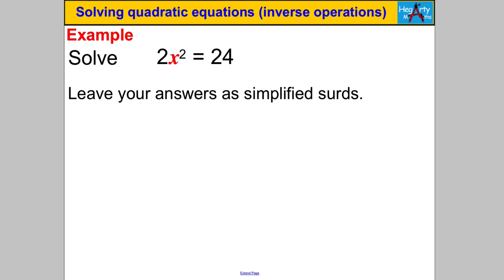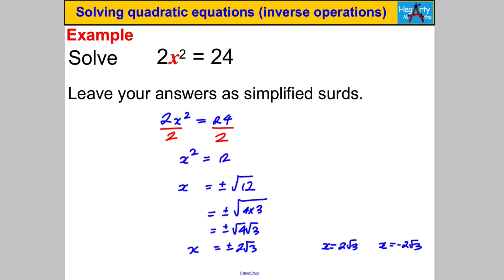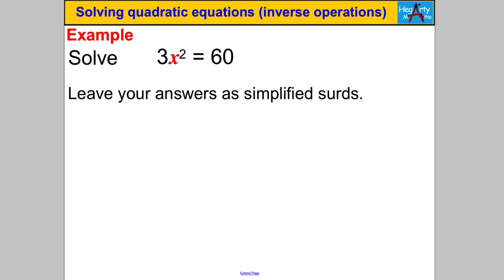Next: 2x² = 24 — leave answers as simplified surds. Divide both sides by 2 to get X² = 12. Taking square roots: X = ±√12. Simplify: 12 = 4 × 3, so √12 = √4 × √3 = 2√3. Therefore X = 2√3 or X = −2√3.